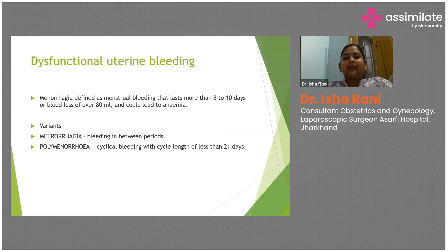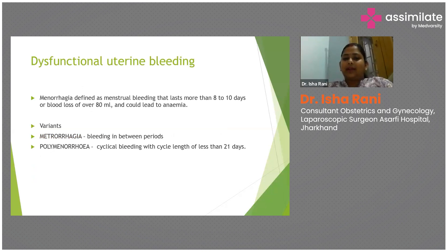Menorrhagia, as defined earlier, generally refers to menstrual bleeding which lasts more than 8 to 10 days, and where the average blood loss in the menstrual cycle is more than 80 ml per cycle. This excessive bleeding can lead to anemia.